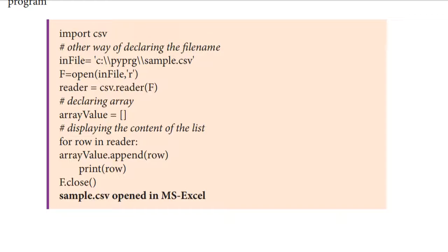First we have to import the CSV module. Next, we mention which file path to use. Then we open the file using the open function, and we use the reader function. Next, we declare an array — an empty list. With the help of the array we get values and display them. For displaying the content of the list: for row in reader, array.append — so the data from the CSV file is read and stored in the array.